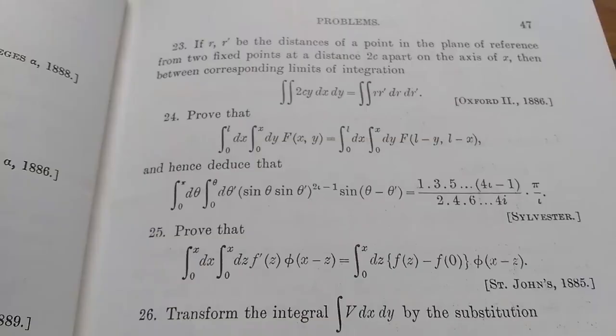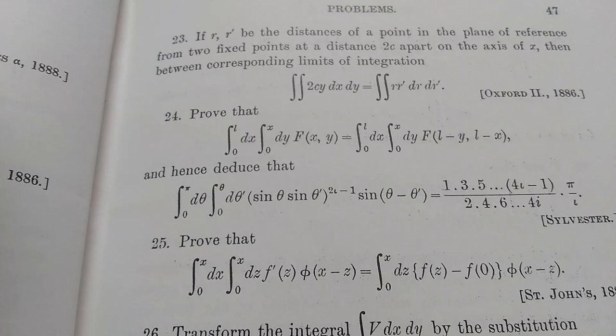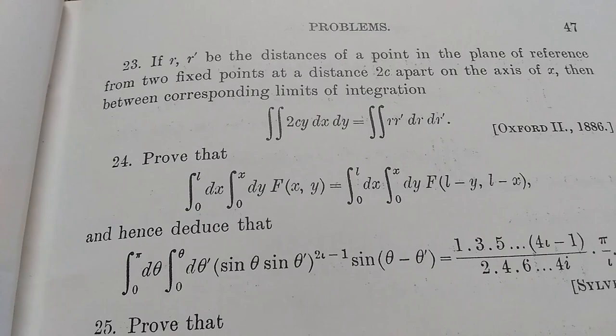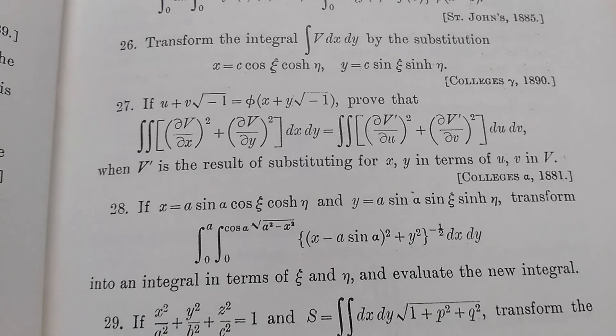Okay, so the coolest thing about this book is the exercises. Look at this. They're all cited. So it's a calculus book that cites its exercises. So like this one is Oxford 2, 1886. Sylvester proved that St. John's 1885. I mean, so everything is cited, not everything. There are some exercises in some sections that don't have like, they're not cited. Like who proved it, who came up with it.